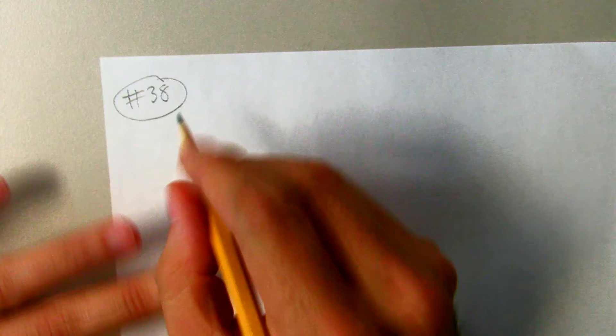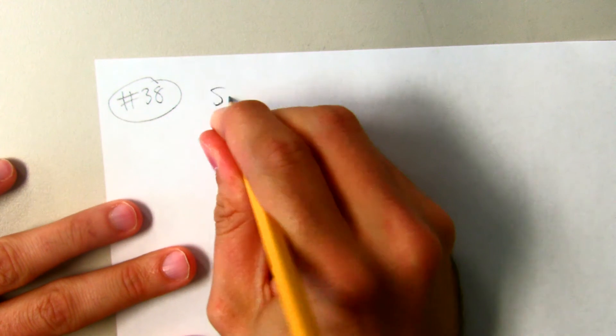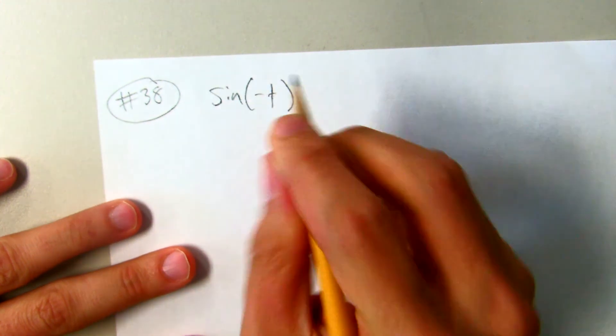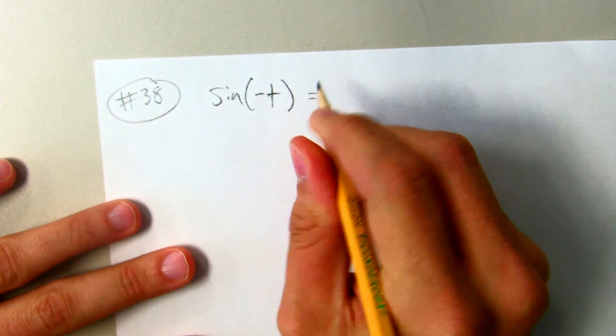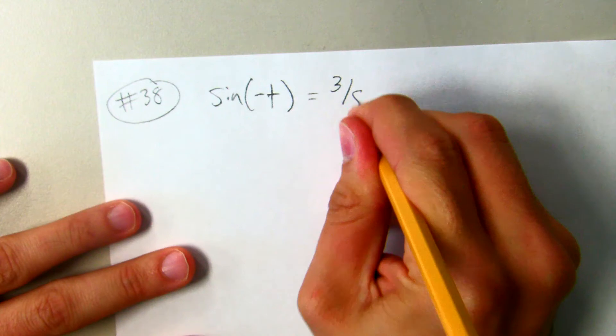Okay, question 38 gives us a piece of information, and this is one of the few things in this section that does not have to do with the unit circle.